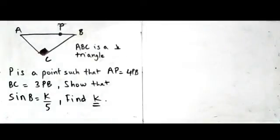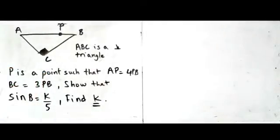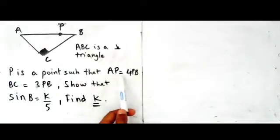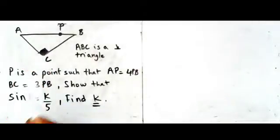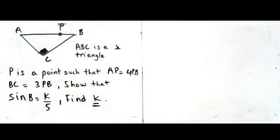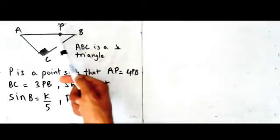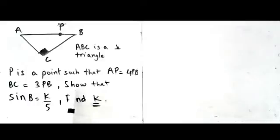Here's another question that I found quite interesting. You've got a right-angle triangle ABC, and P is a point on AB such that AP is equal to 4 times PB — so A to P is 4 times as much as P to B. BC is 3 times PB, so BC is 3 times as big as PB, and you need to show that sin B is equal to K over 5 and find what K is.